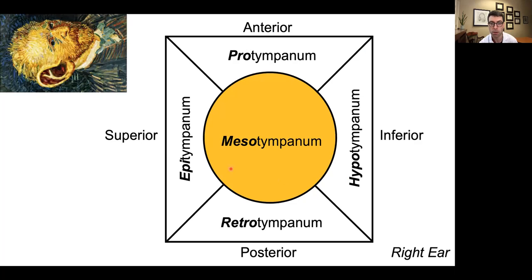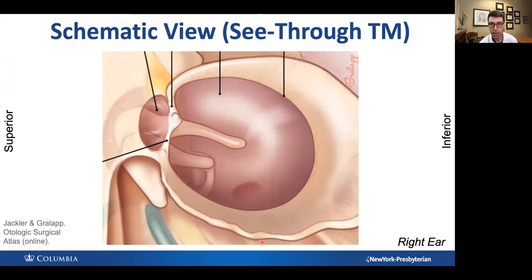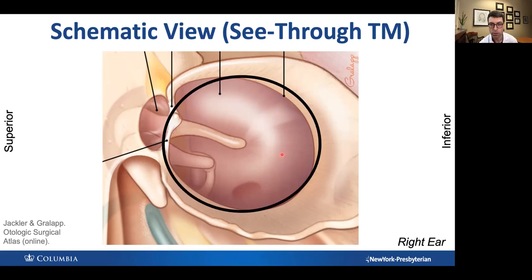Let's start with the mesotympanum. Again, everything is a right ear — superior always to your left, inferior always to your right, anterior in front, posterior to the back. This is a schematic view of the eardrum with neighboring structures. The black circle represents the annulus. The mesotympanum is what you see directly under the eardrum or through the annulus. You can see the manubrium or handle of the malleus, the umbo, cone of light, the incus and the stapes, the promontory, and then the round window niche. These are the key landmarks that should be easy to see.